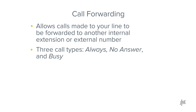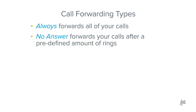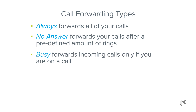There are three different types of call forwarding: Always, No Answer, and Busy. Always forwards all of your calls. No Answer forwards your calls after a predefined amount of rings. And Busy forwards incoming calls only if you are already on a call.